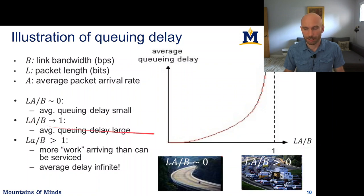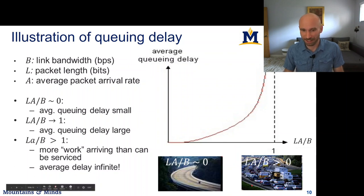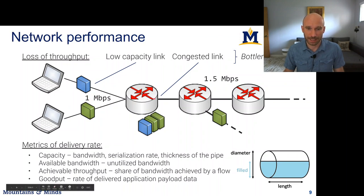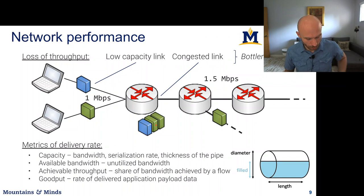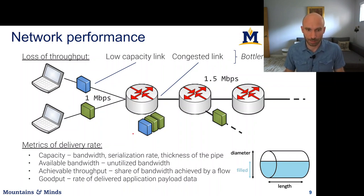When L*A/B exceeds 1, we are sending more data than the network can serve, and in queuing theory the delay becomes infinite. In practice, router buffers are limited by physical memory, so packets start getting lost while the queuing delay becomes very large — a packet may need to make its way through potentially gigabytes of queued data before it can reach the outgoing link to the next router.